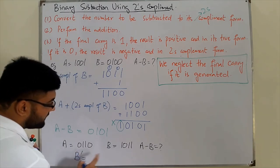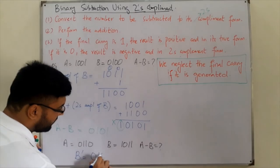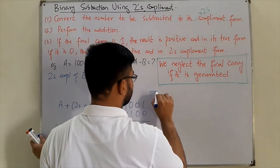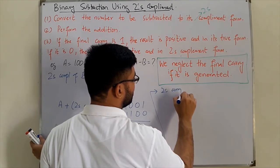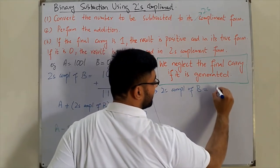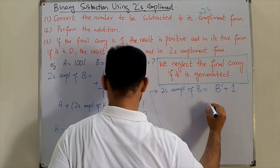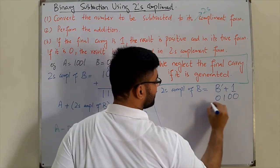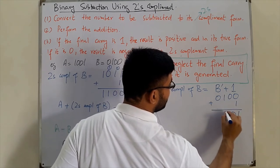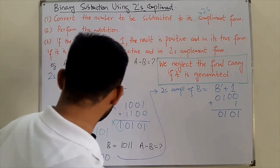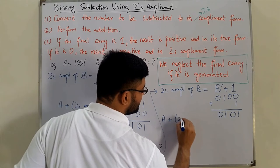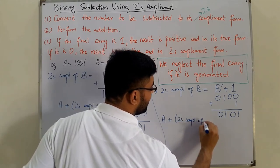First, find the two's complement of B. The one's complement of B, by inverting the bits, is 0100. For the two's complement, we add one: 0100 plus one gives us 0101. So the two's complement of B is 0101, and A minus B is equivalent to A plus the two's complement of B.